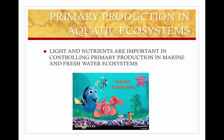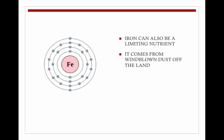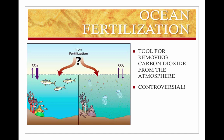In aquatic ecosystems, light and nutrients are very important in controlling primary production in marine and freshwater ecosystems. Limiting nutrients are elements that must be added for production to increase — nitrogen and phosphorus most often limit marine production. They are low in the photic zone because they're taken up by phytoplankton and because detritus sinks. Iron can also be a limiting nutrient, coming from windblown dust off of land. Ocean fertilization is a concept that can remove CO₂ from the atmosphere — adding iron to an area caused phytoplankton to reproduce and cause an algae bloom.